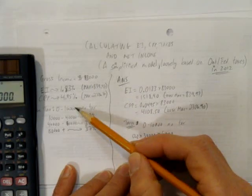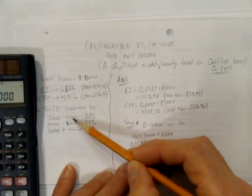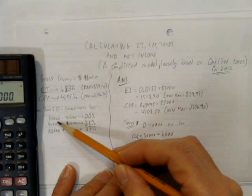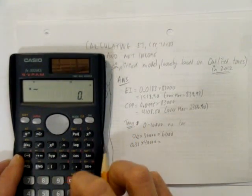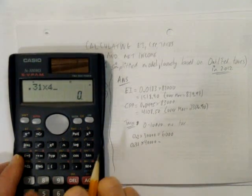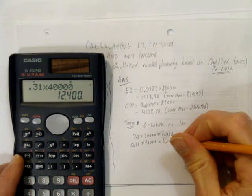The next amount of money, the $30,000 in this bracket, was taxed at 20%. The next $40,000 is taxed at 31%. Let's see what that is. 31% as a decimal times the $40,000 that's taxed in that tax bracket is $12,400.